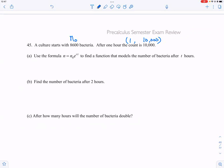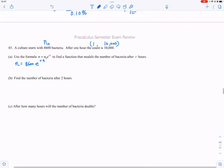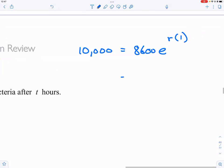We want to use these numbers to create a model, so we have n equals 8600 times e to the rt. We need to find out the r again, so let me go ahead and do that. 10,000 equals 8600 times e to the r1, which is very nice. You can just do 100 divided by 86 and then e to the r.